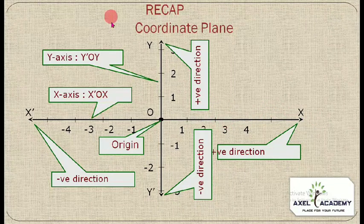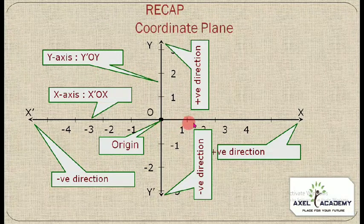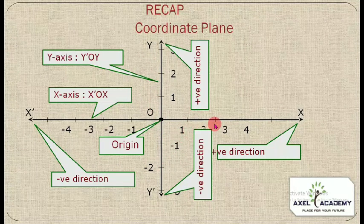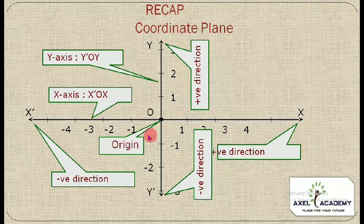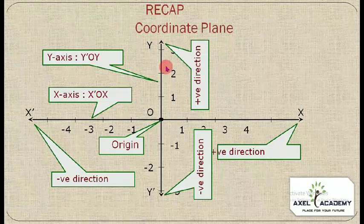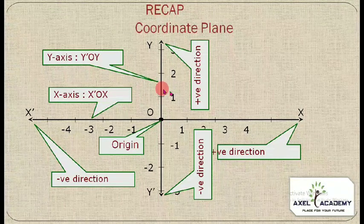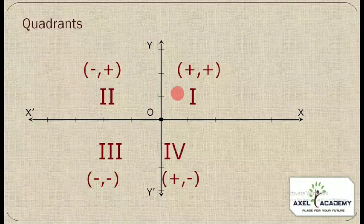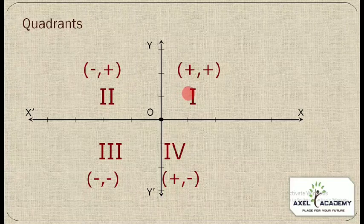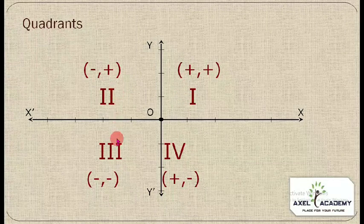We have two axes: the x-axis and the y-axis, with the origin O. Both axes have two directions — a positive direction and a negative direction. In the positive direction we plot positive real numbers, and in the negative direction we plot negative real numbers. This gives us our four-quadrant system.